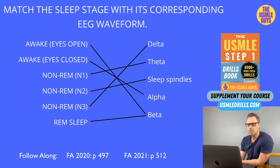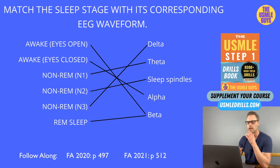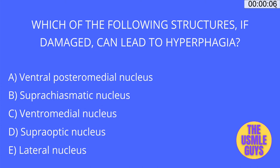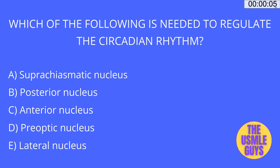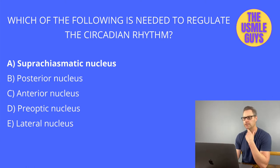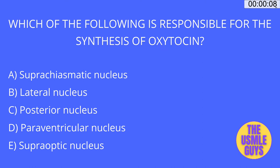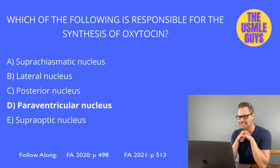Now we're going to look at the hypothalamus with three multiple-choice questions. The correct answer to the first question is C, ventromedial nucleus. The correct answer to the second question is A, suprachiasmatic nucleus. And the correct answer to the last question is D, paraventricular nucleus.